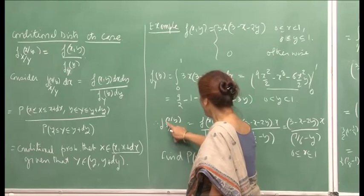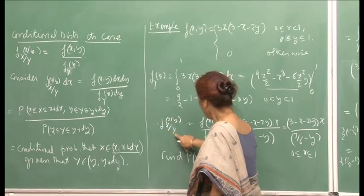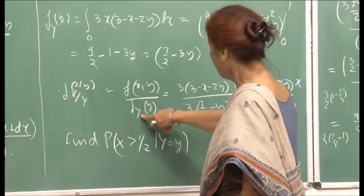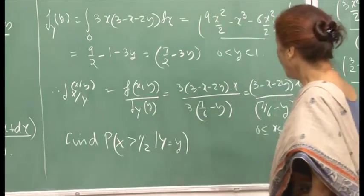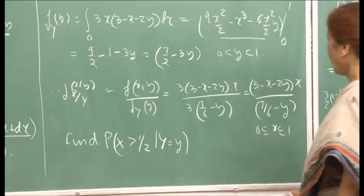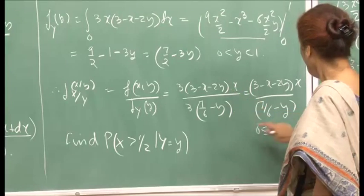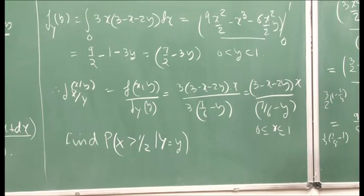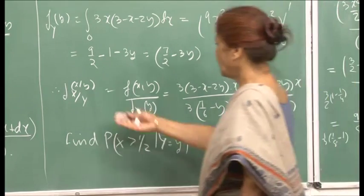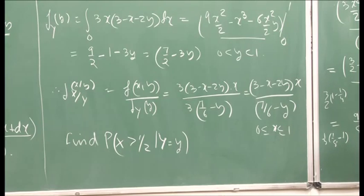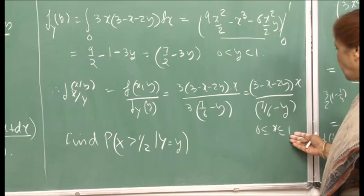If you want to find out the conditional of x given y, then by definition it is the ratio f(x,y) divided by f_Y(y). Because I have computed f_Y(y), this is the ratio and it comes out to be a specific expression. For fixed x and y, this will be the conditional PDF of x given y, and x varies between 0 and 1.